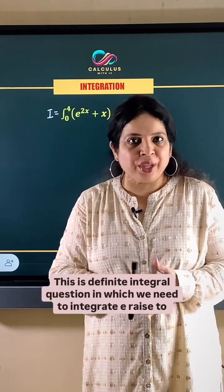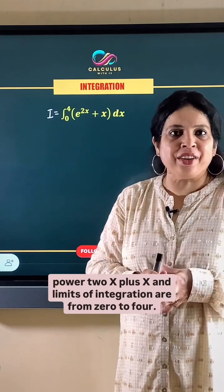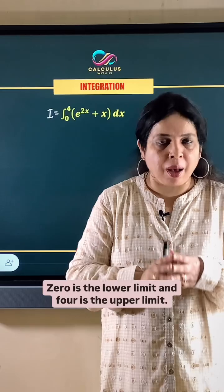This is a definite integral question in which we need to integrate e raised to power 2x plus x, and limits of integration are from 0 to 4. Zero is the lower limit and 4 is the upper limit.